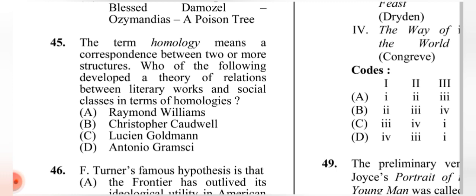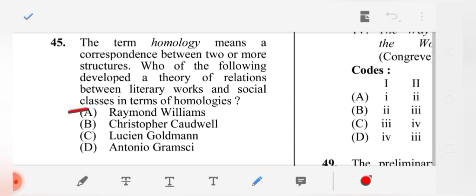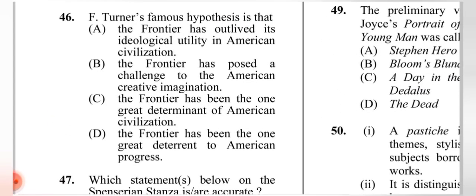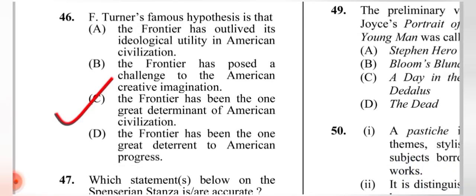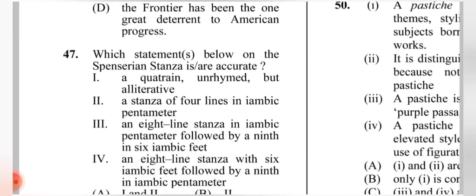Question 45: The term 'homology' means a correspondence between two or more structures. Who among the following developed a theory of relations between literary works and social classes in terms of homologies? I have some doubt — please verify — but according to my research it may be (C). Question 46: Turner's famous hypothesis is (C) that the frontier has been the one great determinant of American civilization.